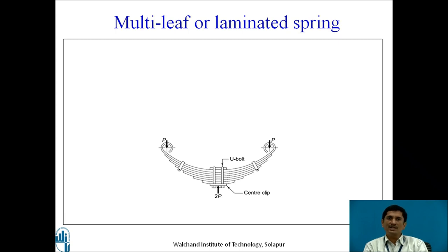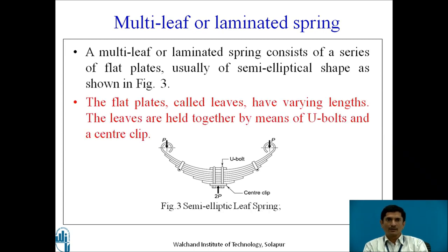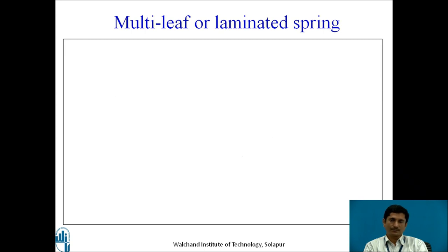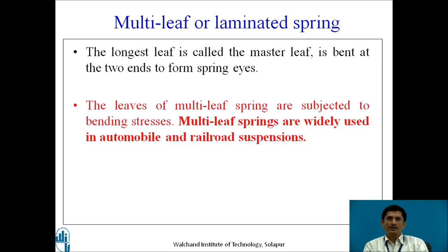Another type of spring is the multi-leaf or laminated spring, commonly seen in the rear axle of trucks. It consists of a series of flat plates, usually of semi-elliptical shape. The flat plates, called leaves, have various lengths and are held together by U-bolts and a center clip. The longest leaf is called the master leaf, bent at both ends to form spring eyes, which are connected to the chassis by a shackle. The leaves are subjected to bending stresses and are widely used in automobile and rail suspensions.